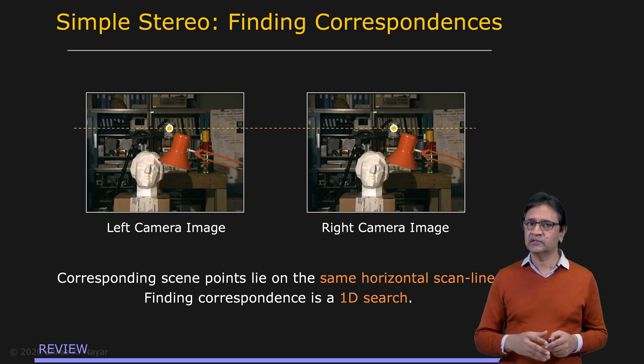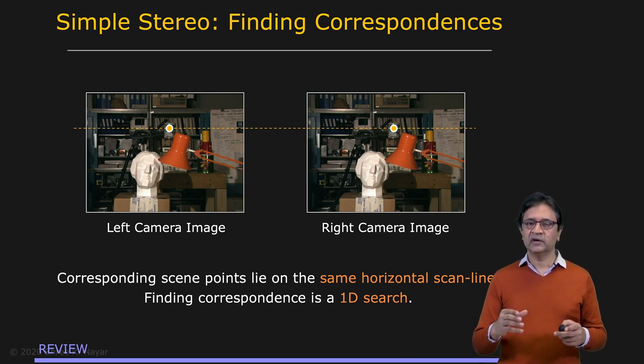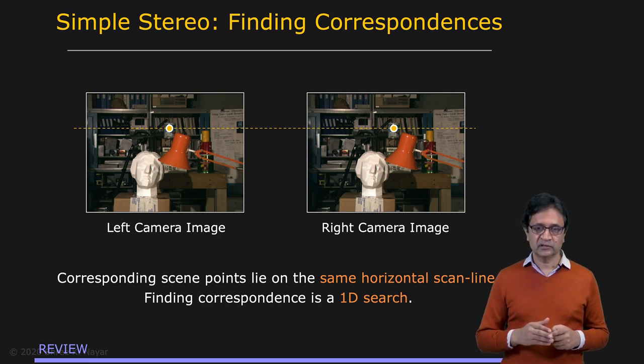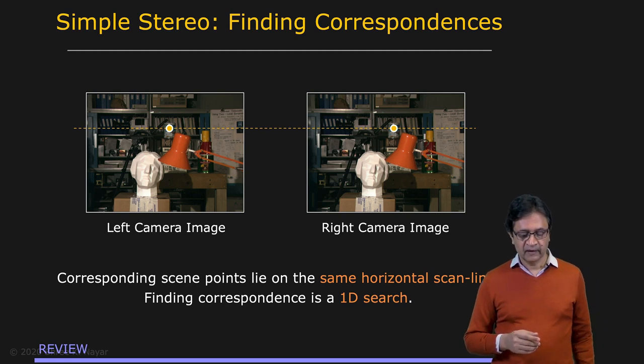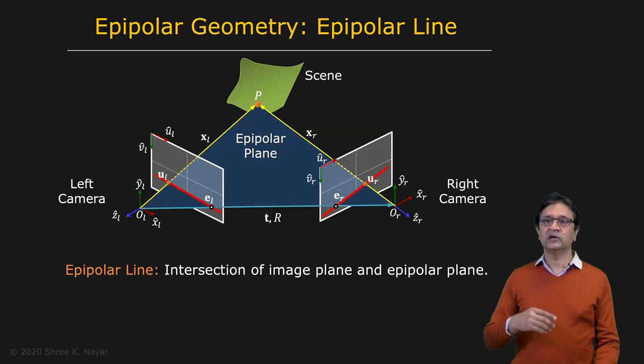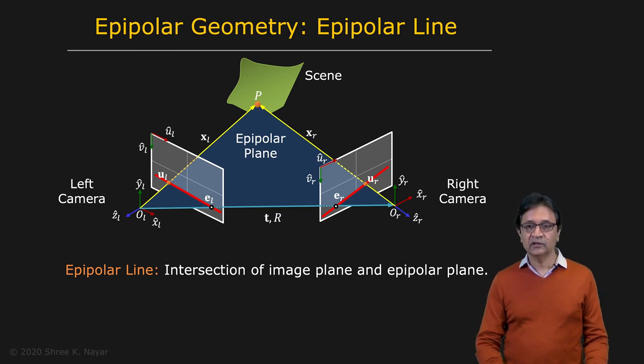It turns out that in the case of uncalibrated stereo as well, once we have found rotation and translation between the two cameras, the stereo matching problem still remains a 1D search. But the question is along which line in the right image should we be searching? So that brings us back to epipolar geometry and the notion of the epipolar line.